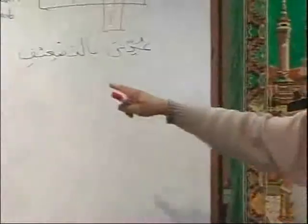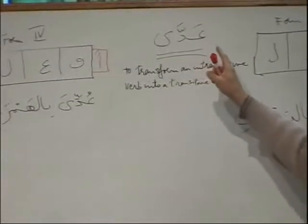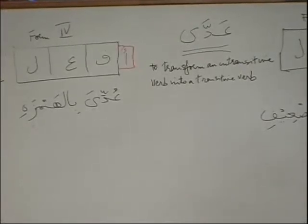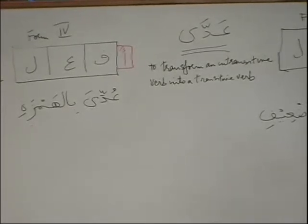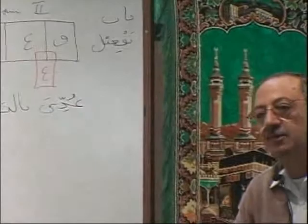Adha means to transform an intransitive verb into a transitive verb. And the masdar of adha is tadiya. Kharaja Hamidun minal fasli — this is lazim. Akhraja al-muraqibu Hamidun minal fasli — the supervisor took Hamid out of the class. Okay brother, inshallah, I leave it to you — you will be able to do it at home.